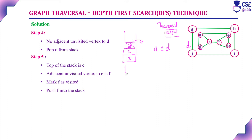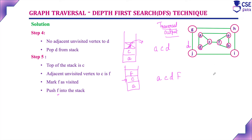Step 5: The stack contains A and C. The top of the stack is C, so consider the adjacent unvisited vertex to C, which is F — A and D are already visited. Push F into the stack and mark F as visited. Traversal output is A, C, D, F. D is the first vertex we have popped from the stack.